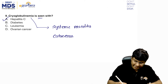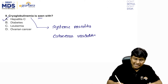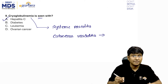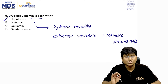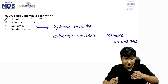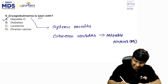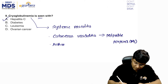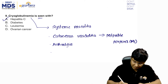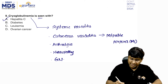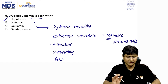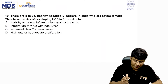In systemic vasculitis associated with cryoglobulinemia, there is development of cutaneous vasculitis, which leads to palpable purpura — the most common manifestation. Other features include arthralgia, neuropathy, and glomerulonephritis. The correct answer is hepatitis C.